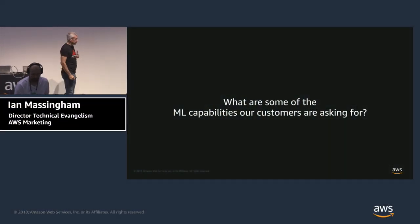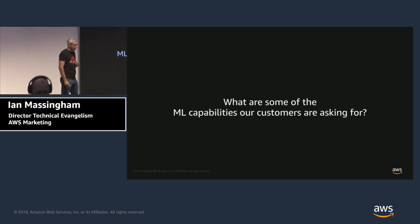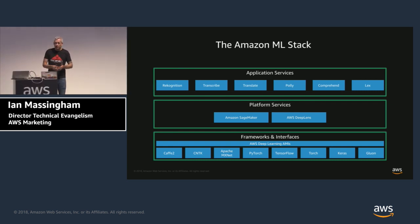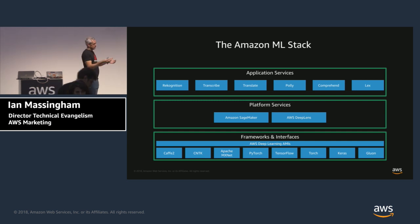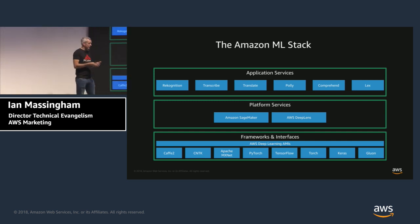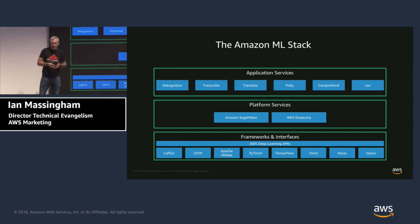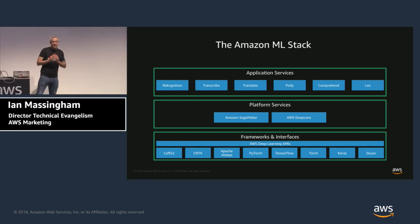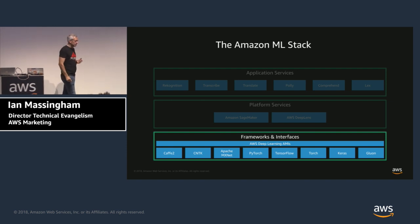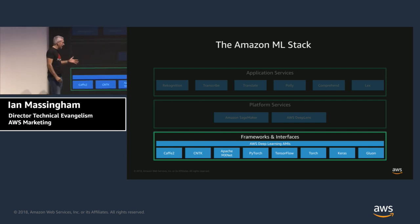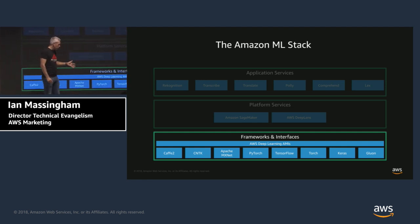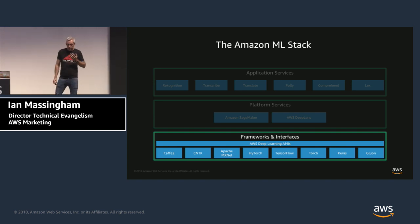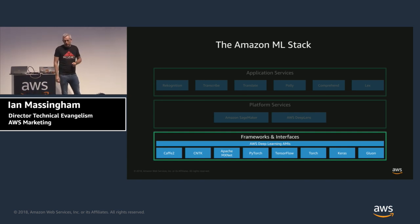Let's talk about what AWS does in practical terms to help customers build systems like this. Developers are not one amorphous homogeneous mass — they're stratified with different needs, different use case requirements, and different levels of competence. So we have services that address different needs within the developer community. For expert developers familiar with Apache MXNet, TensorFlow, PyTorch, Keras, and others, we have high-performance on-demand computing resources optimized for running these machine learning tools.